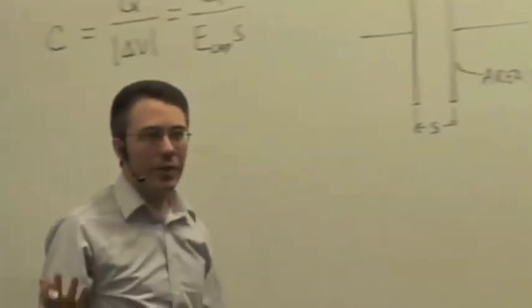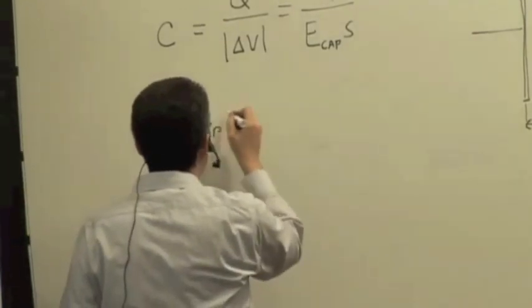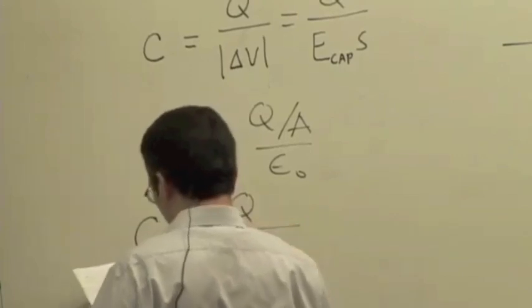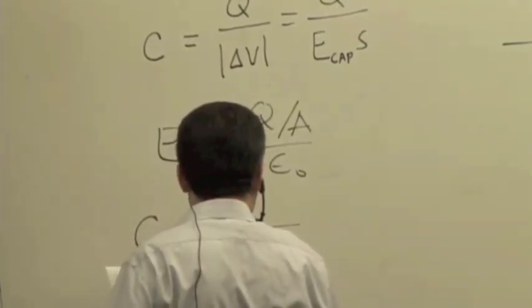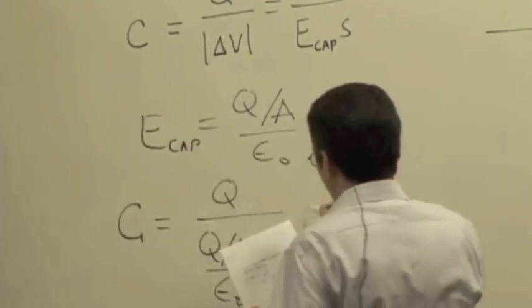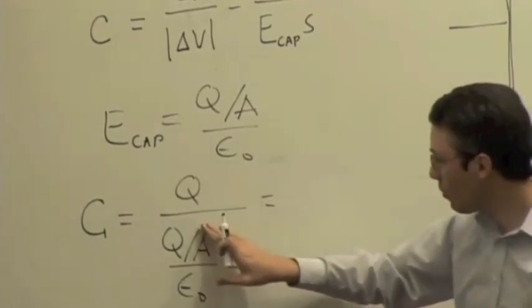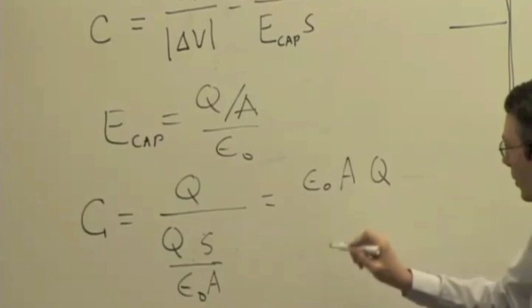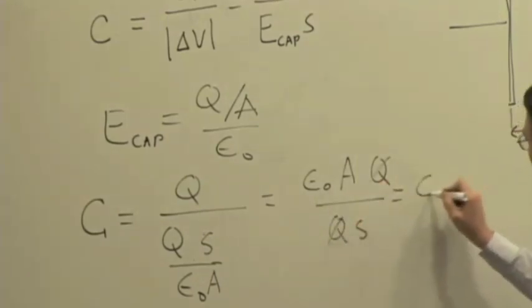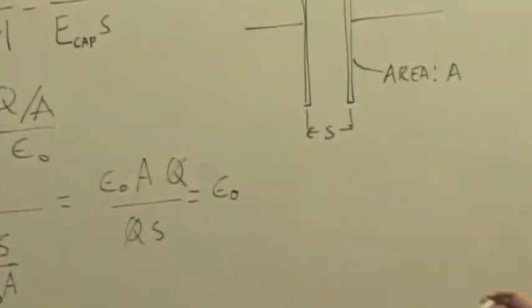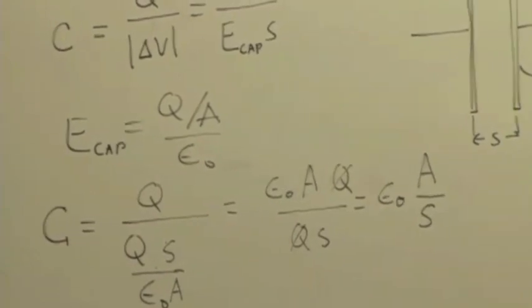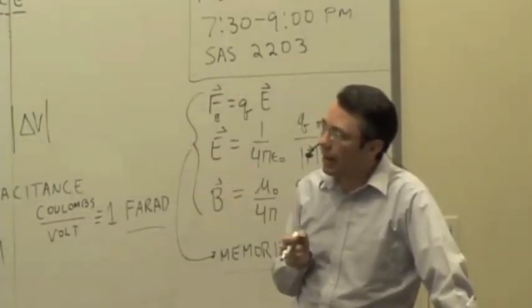We have a formula for the electric field inside a capacitor: E = Q over A divided by epsilon naught. Plugging that in, the capacitance is Q divided by (Q over A over epsilon zero) times S. Rearranging, the Q's cancel out, and we get C = epsilon zero times A over S, which equals 8.85 × 10⁻¹² times the area divided by S. So the capacitance only depends on the area and the separation for a parallel plate capacitor.